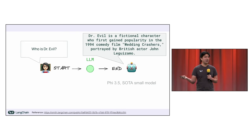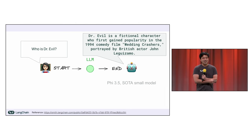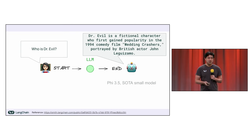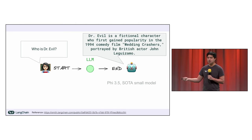It thought Dr. Evil was from a movie called Wedding Crashers, and it thinks he's a British actor named John Leguizamo. You can see the response — it knows it's like a character and it's kind of close — but this is actually worse than useless for building useful apps, because it's the kind of thing where a future step might think this sounds plausible and pass it through just fine. It'd be better if it was completely wrong rather than partially wrong.